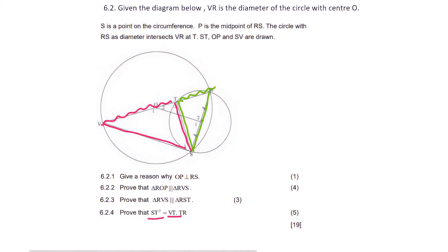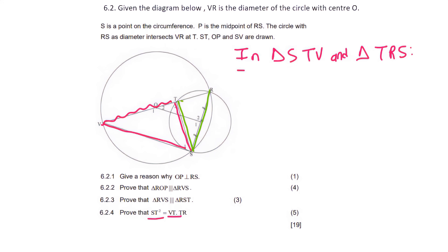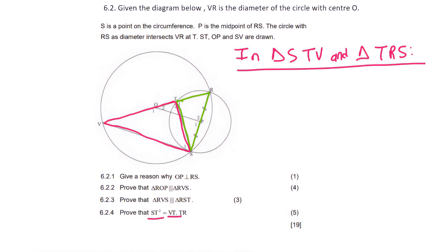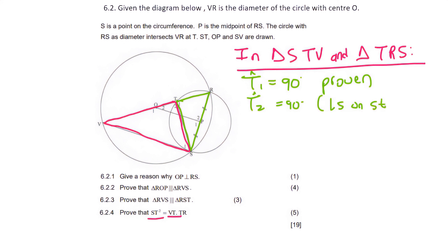We're going to prove that two triangles are similar, so we tell the teacher which triangles we're working in: triangle STV and triangle TRS. When telling the teacher which triangles you're working in, the order does not matter — order only matters when you state at the end that one triangle is similar to the other. We already proved that T1 is 90 degrees, proven as an angle in a semicircle. T2 is 90 degrees because of angles on a straight line.